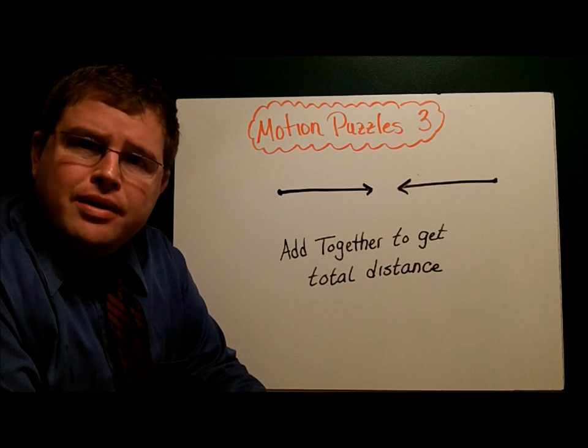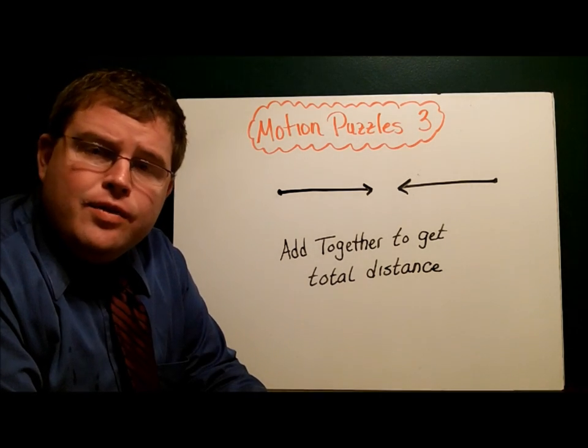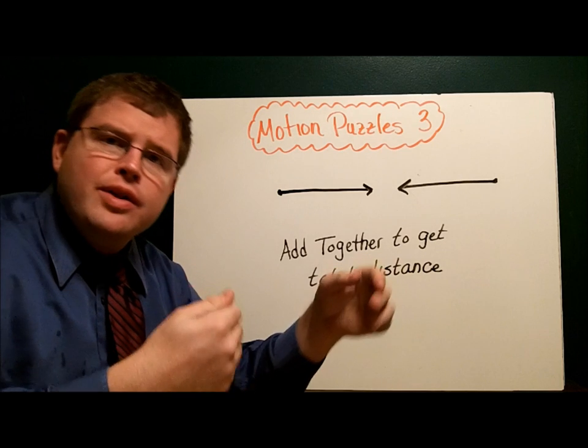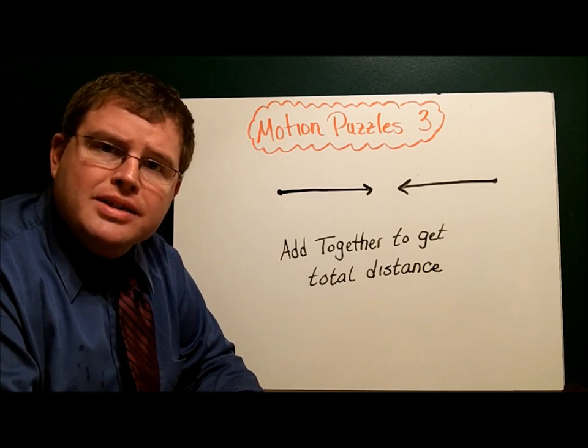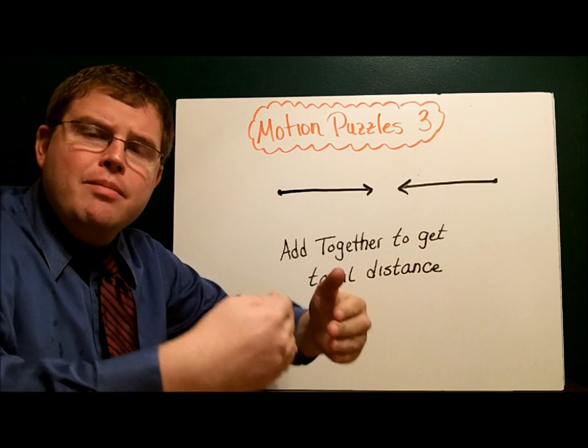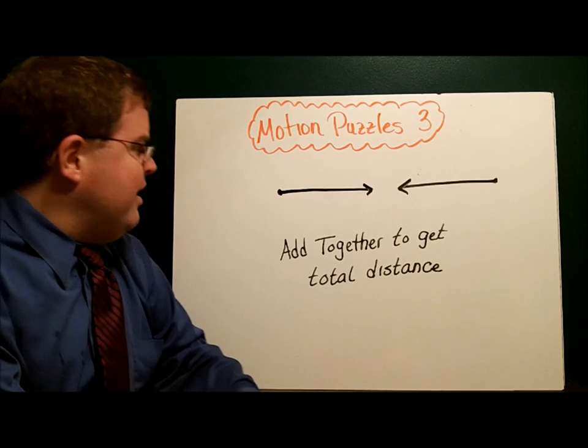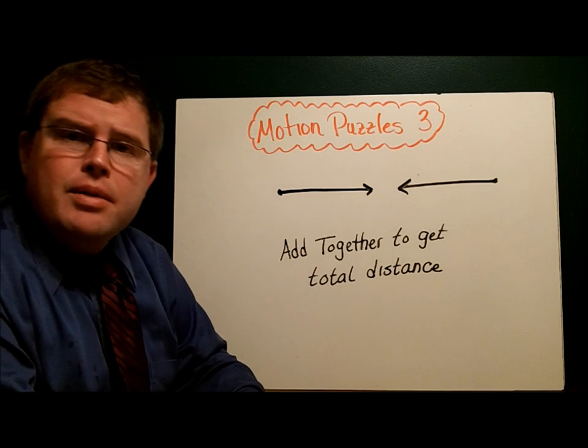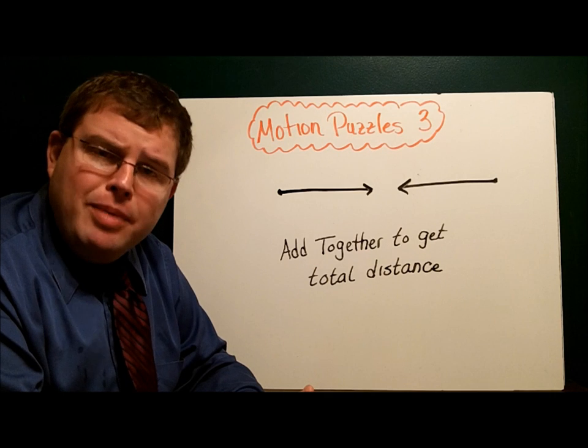Let's take a look at a couple more possibilities when dealing with motion puzzles. We start at two separate points and have vehicles traveling toward one another. Suppose you want to meet a friend in the middle - one lives in Boston, one in Pittsburgh. You get onto the thruway and want to know where you'll meet. When you take this piece here and this piece here and add them together, you get the total distance traveled, and that's going to help us solve puzzles like this.